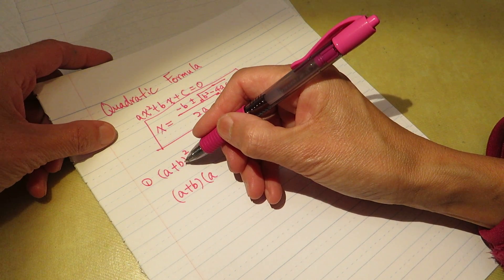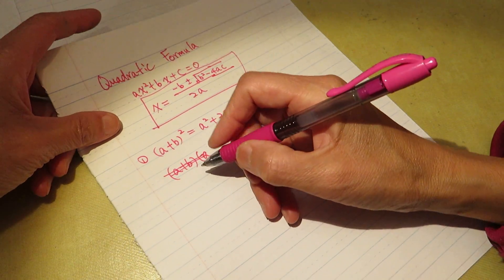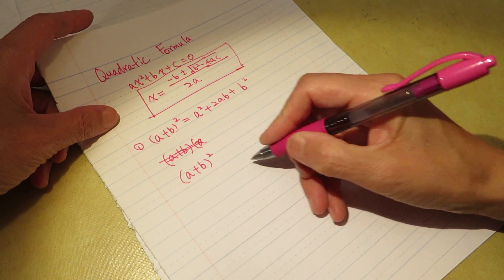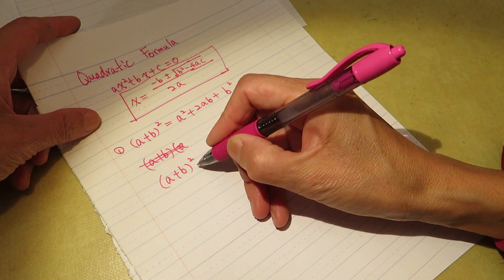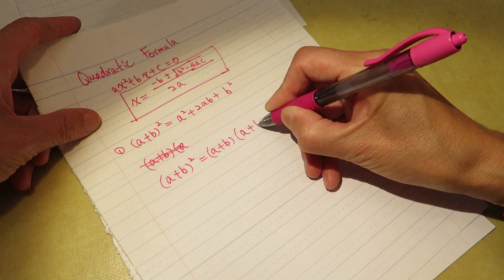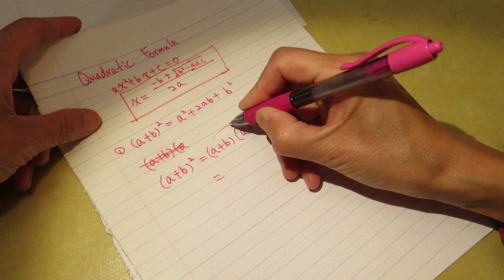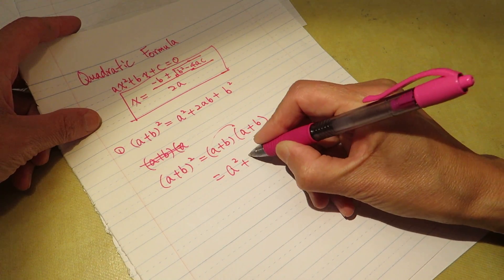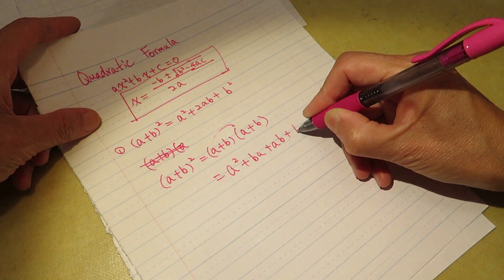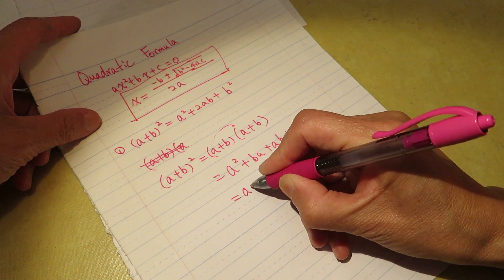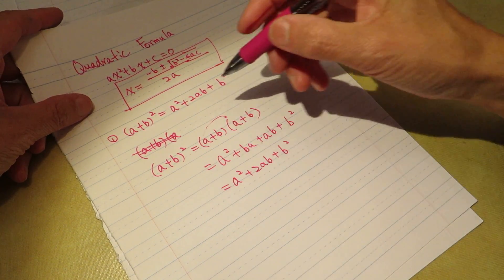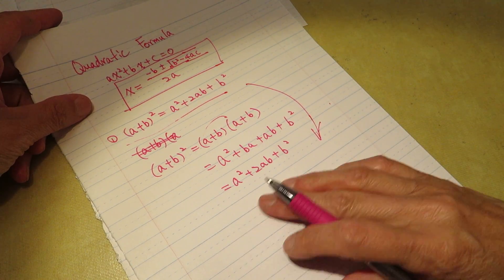a² plus, okay, I will do it. I will write it step by step. (a plus b)² equals (a plus b) times (a plus b) equals this one, a² plus ba plus ab plus b² equals a² plus 2ab plus b². So you get which is the same.